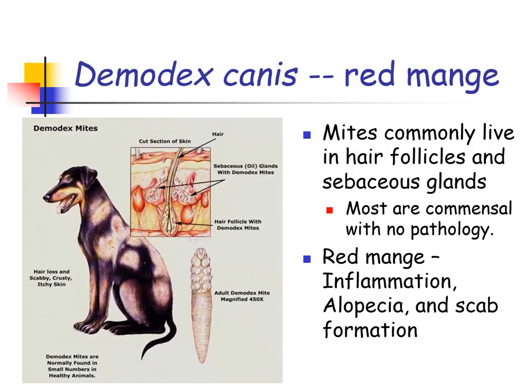The Demodex canis mites commonly live in the hair follicles and sebaceous glands. Most are considered to be commensal with no pathology. All normal dogs have a small population of demodex mites, but some dogs develop an overgrowth of these mites. When there is an overgrowth, the condition known as red mange develops, characterized by inflammation, alopecia, and scale formation.